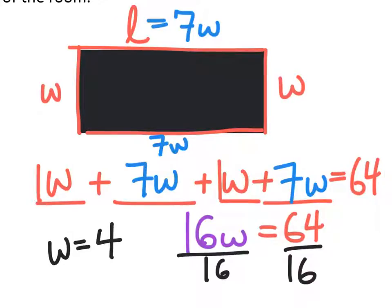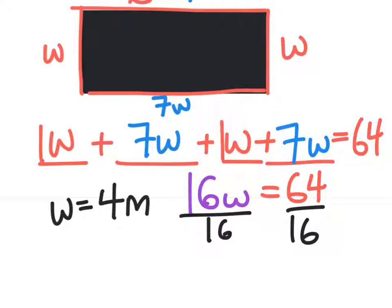But here's the thing, you guys. Don't write just 4, please. This is a word problem. We know the units being used to measure. And that is in meters, okay? So that's my width. But once again, I'm still not finished. We're still missing the length on this. The length was seven times the width. So seven times that 4, that would give us 28 meters here.